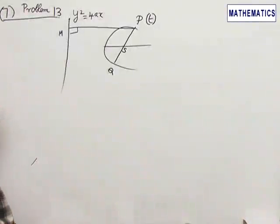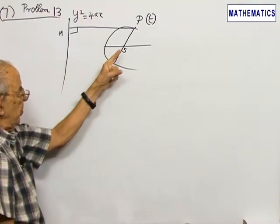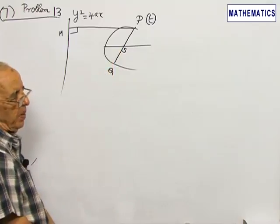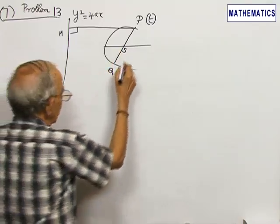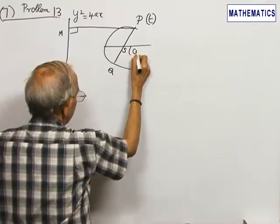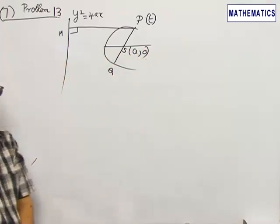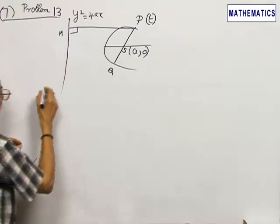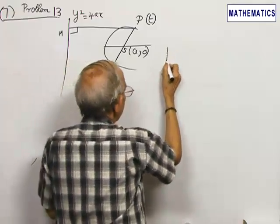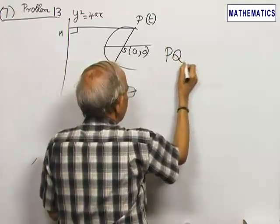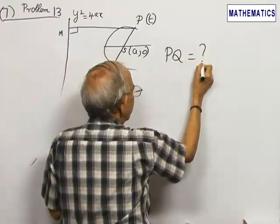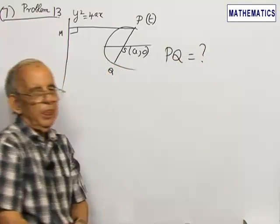Question number 7 refers to problem 13. y squared equal to 4x is a parabola. PQ is a chord of the parabola passing through the focus. The parameter of P is t. You are asked to find the length of this focal chord in terms of the parameter.